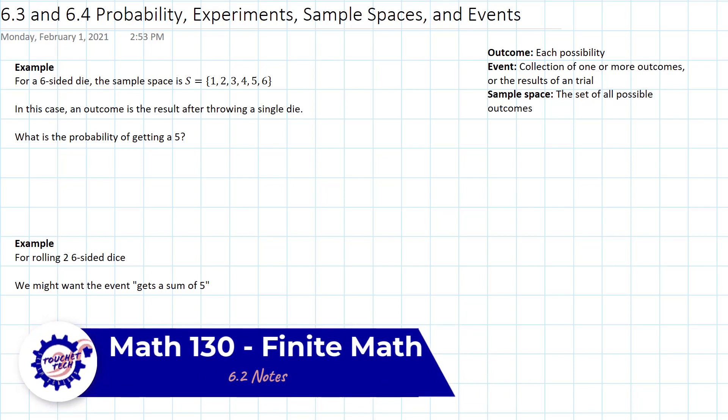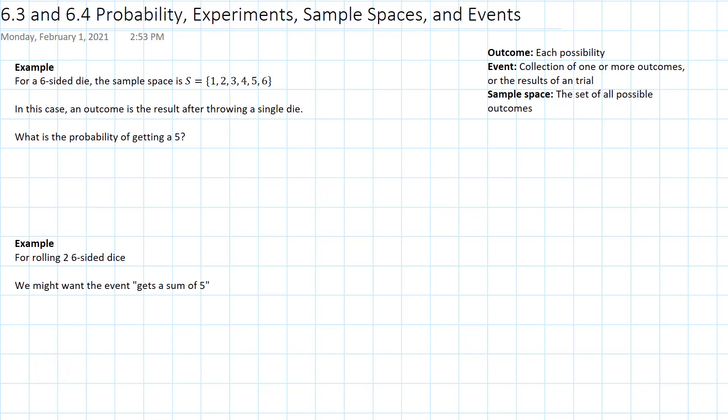Alright, hopefully you've already read 6.3 and 6.4 entitled Probability, Experiments, Sample Spaces, and Events. If you haven't, you'll probably want to go read those first because this is intended to add on to your understanding, not to give you the full idea. A couple of terms you've already got then would be Outcome, which is just each possibility. An event, which is if you've got a collection of outcomes that might happen, like on one trial, that's the event that we're talking about. And Sample Space, that's all possible outcomes that could happen. So let's dive into this.